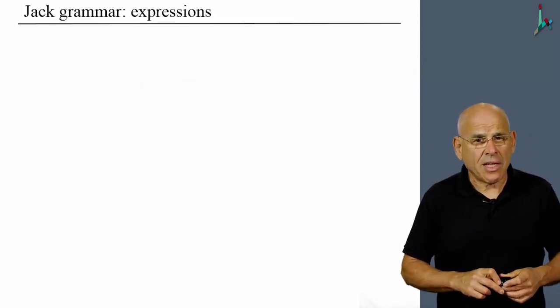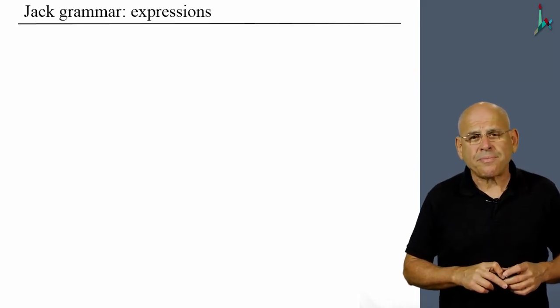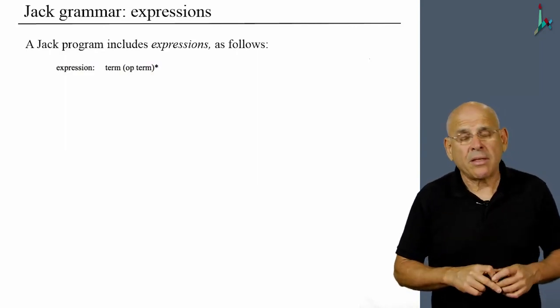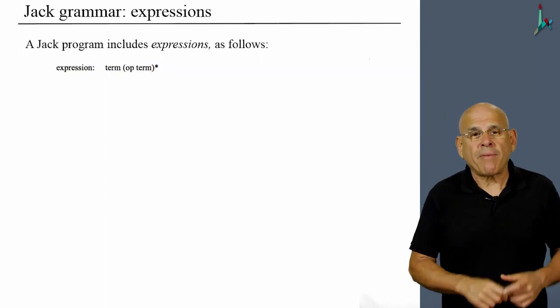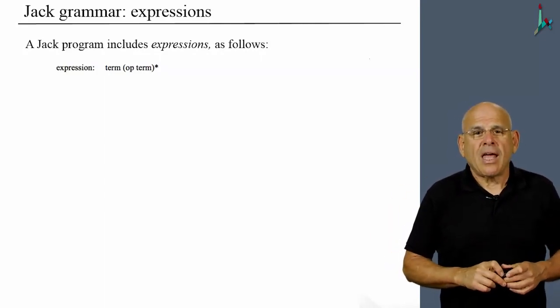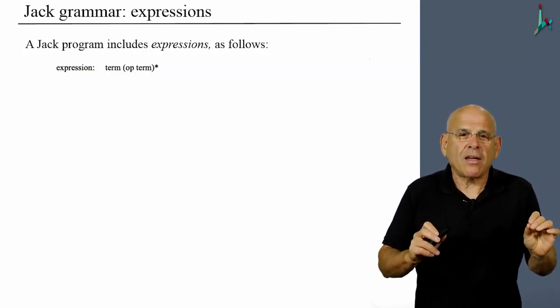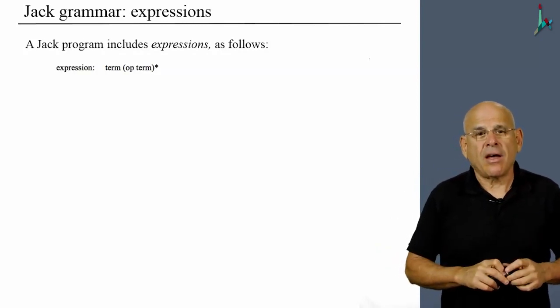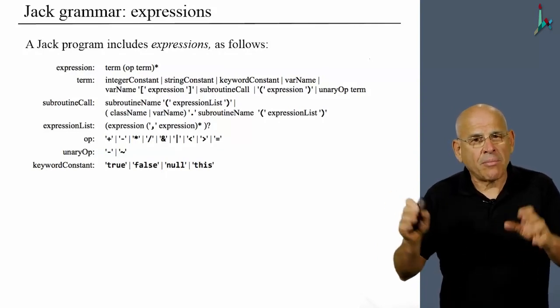All right, finally we have expressions. That's the last thing that the grammar describes. And the expressions are similar to what we discussed in our previous examples. An expression is a term followed by an optional op term clause.